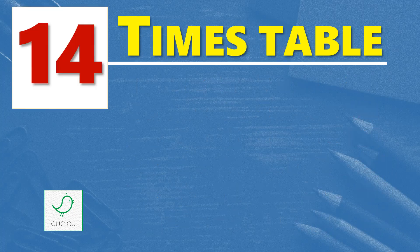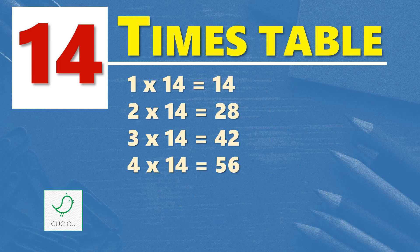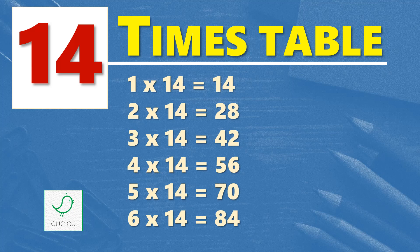Fourteen times table. One times fourteen is fourteen, two times fourteen are twenty-eight, three times fourteen are forty-two, four times fourteen are fifty-six, five times fourteen are seventy, six times fourteen are eighty-four.